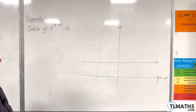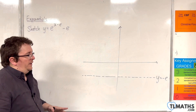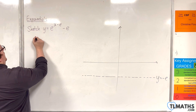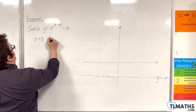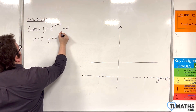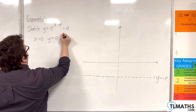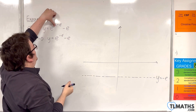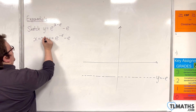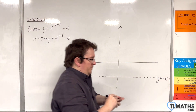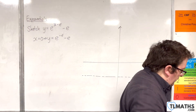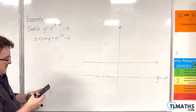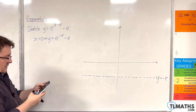Now we need to determine where it crosses the y-axis, and that's going to be when x is 0. When x is 0, y will be equal to e to the power of minus e, take away e.